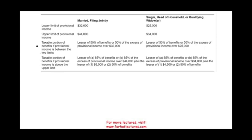Here's how the formula works. I'm going to go over the formula for married filing jointly, and it works the same way for single, head of household, or qualifying widow or widower. If your provisional income is below $32,000, zero of your social security is taxable. If your provisional income is between $32,000 and $44,000, the taxable portion is the lesser of 50% of your social security benefit or 50% of the excess of provisional income over $32,000.